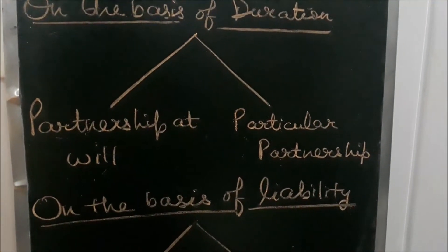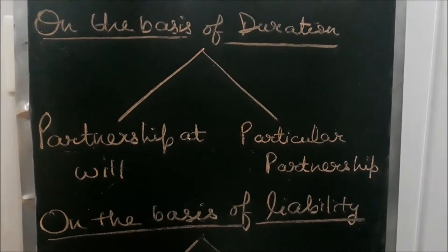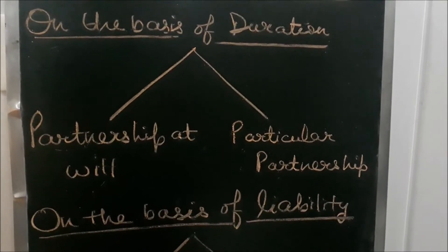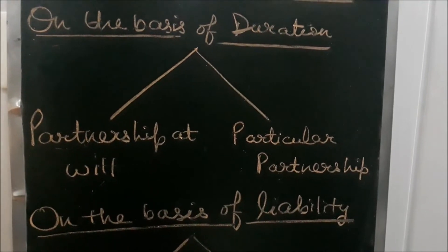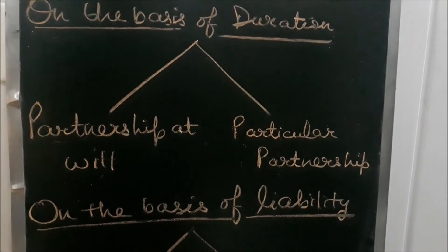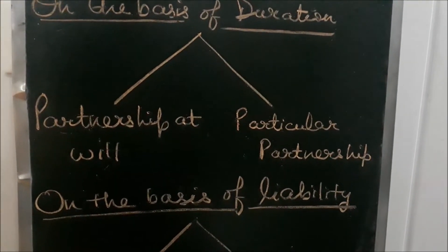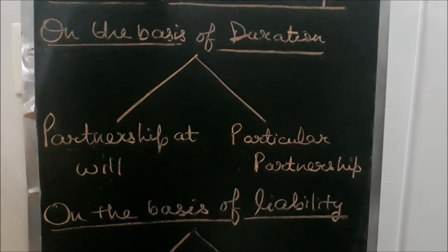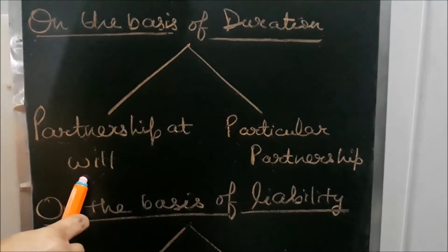Partnership at will is that type of partnership which is based on the will of the partners. These partnerships are done for an indefinite period of time. If partners want, they can continue the partnership for a long period of time. If any partner wants to leave, that partner has to give notice to the firm. The partnership will then end, and if remaining partners want to continue, they have to make a new agreement.